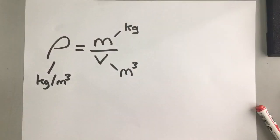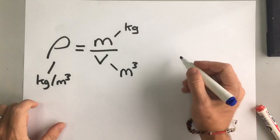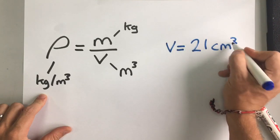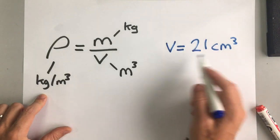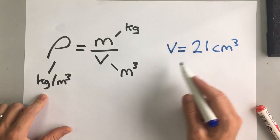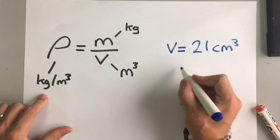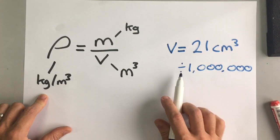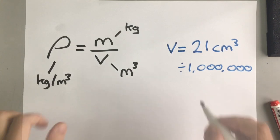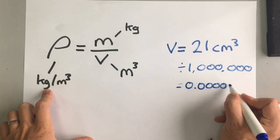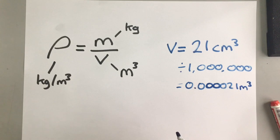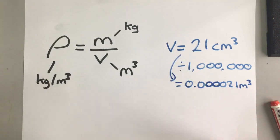Now that 21 milliliters I know is my iron bar. And I also know that one milliliter is one centimeter cubed. So now I know that my iron bar, the volume of my iron bar is 21 centimeters cubed. Now, remember, we want volume in meters cubed. So we have to change that from centimeters cubed to meters cubed. And the way we do that is by dividing by one million. So 21 divided by one million is 0.000021.